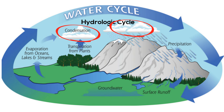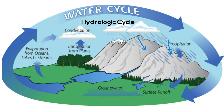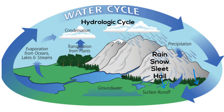This moisture in the atmosphere may be transported around the globe until it returns to the surface as precipitation. Precipitation may take the form of rain, snow, sleet, or hail.